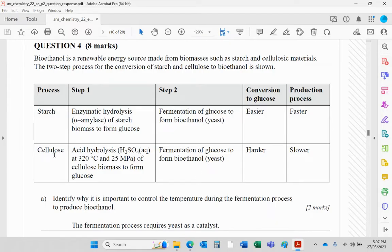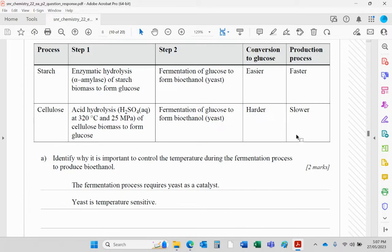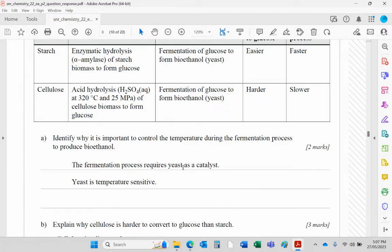Cellulose, if you wanted to do the same thing with cellulose, it would need probably more difficult conditions. We can break down starch as you know. We can't break down cellulose. Acid hydrolysis, sulfuric acid at a high temperature and a high pressure, is needed to break down cellulose to glucose. It's a much harder conversion as you can see. And that would mean it would probably be slower as well. So why do we control the temperature during the fermentation process? Because we're using enzymes, and enzymes are very sensitive to pH and temperature. Yeast is very sensitive to temperature.